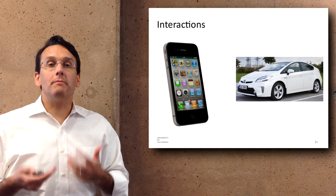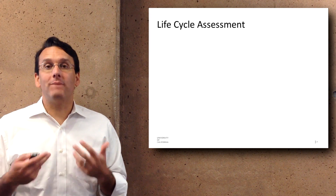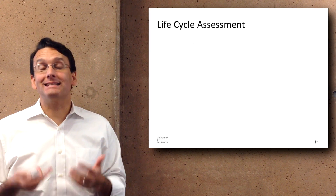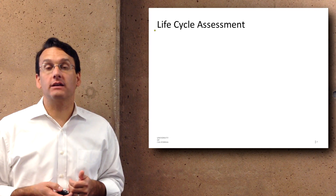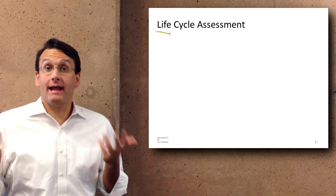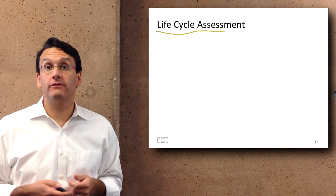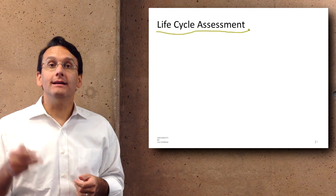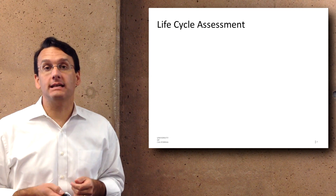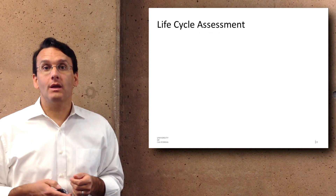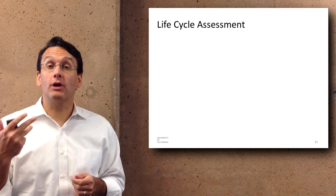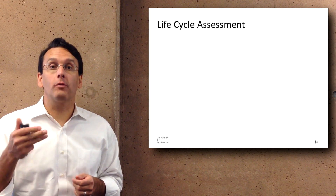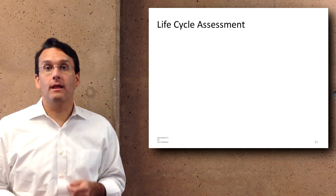One of the mechanisms by which you can assess the impact of a given piece of technology — or any other thing — is called life cycle assessment. Life cycle assessment is a process that involves four main elements.